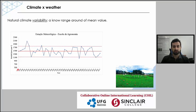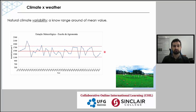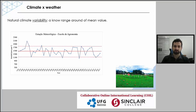Here we have data from our university weather station from 1978 to 2017 — 40 years of annual rainfall data. The red line is the mean value across these 40 years. Between years, there is a natural variability because the climate system changes across different periods. We can see periods with more rainfall and periods with less. But between these two dashed lines is the natural variability that occurs specifically in this region. From one year to another, there can be big changes.